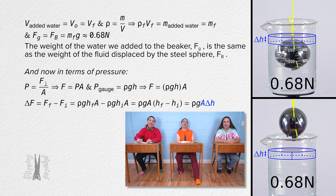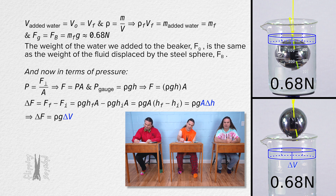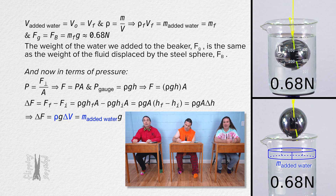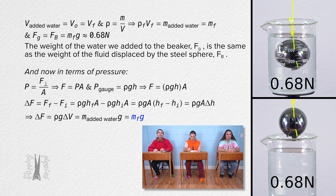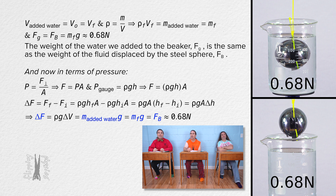The area of the base times height equals volume, so the cross-sectional area times the change in depth equals the change in volume of the water. The density of the water times the change in volume equals the mass of the fluid you added to the beaker after taking the steel sphere out. And because density times volume equals mass, the mass of the water you added is the same as the mass of the water displaced by the object. That mass times the gravitational field strength equals the buoyant force acting on the steel sphere. We just proved, this time using pressure, that the change in the force measurement of the force sensor equals the buoyant force acting on the steel sphere, and it equals the weight of the volume of water added to the beaker after we removed the steel sphere.